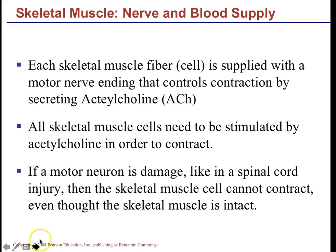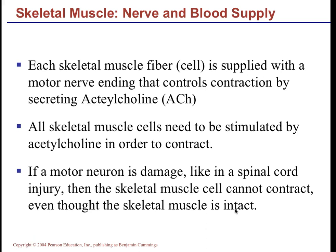Each muscle cell has a nerve and blood supply. The blood supply delivers nutrients and removes waste, while nerves instruct the muscle cell to contract. The muscle fiber is innervated by a motor neuron that always releases the neurotransmitter acetylcholine. If the motor neuron is damaged — as in a spinal cord injury — the muscle cell cannot contract even though the muscle itself is intact, because it must be told to contract by acetylcholine.